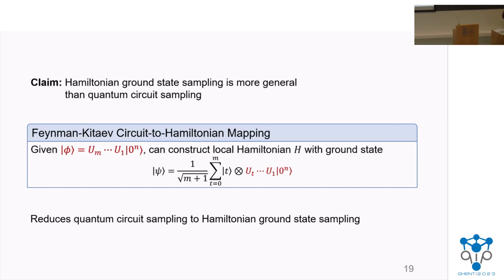This task is more general than sampling from the output distribution of quantum circuits. Given a quantum circuit U₁ through U_m, we can obtain a local Hamiltonian H via the Feynman-Kitaev circuit Hamiltonian mapping. This H has a history state ground state |ψ⟩. Given the ability to sample from |ψ⟩, we can sample from the circuit's output distribution by sampling from |ψ⟩ and post-selecting on the first register being m. This reduces quantum circuit sampling to Hamiltonian ground state sampling, and the second register also reveals the sub-circuit state structure exploited in the gate-by-gate algorithm.